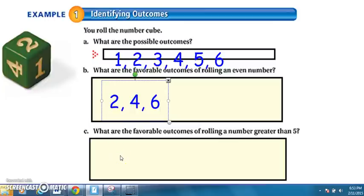Let's look at C. What are the favorable outcomes of rolling a number greater than five? So if I look back at my possible outcomes, there are six up there. Which ones of those are greater than five? Well, there's only one. Six would be the only favorable outcome in this situation. It's the only number that meets the criteria greater than five.